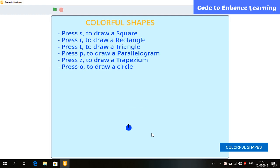Similarly, we can make other shapes by pressing their corresponding keys. Let's do it. Press R to draw a rectangle. Press T to draw a triangle. Press C to draw a circle. Press P to draw a parallelogram. And press T to draw a trapezium.